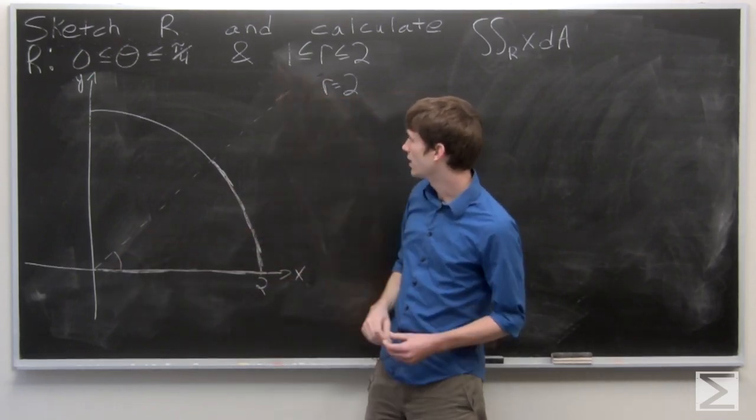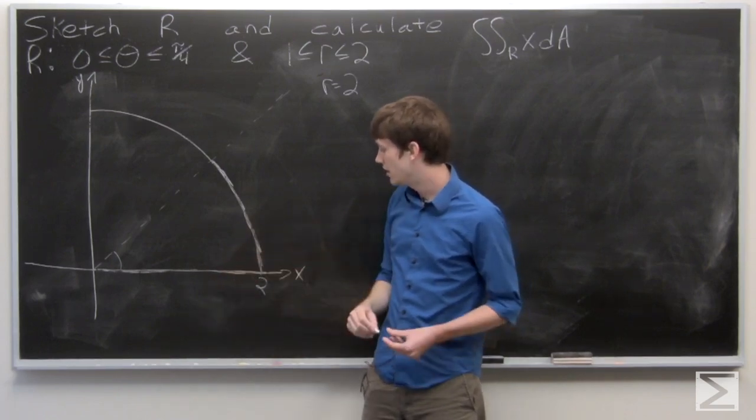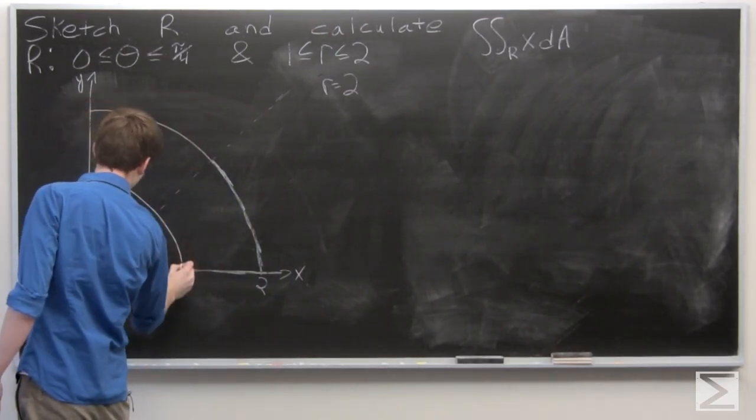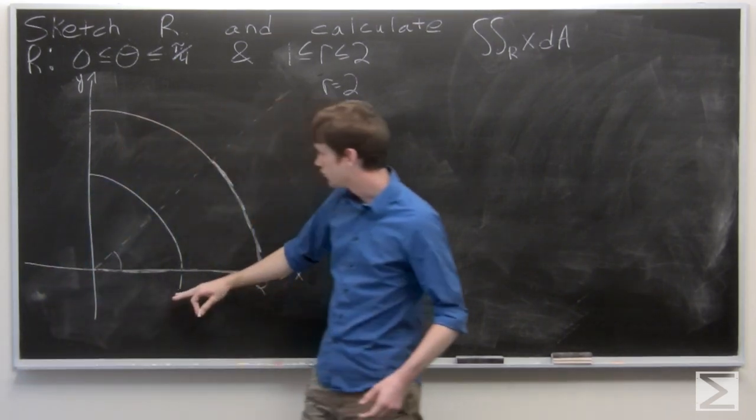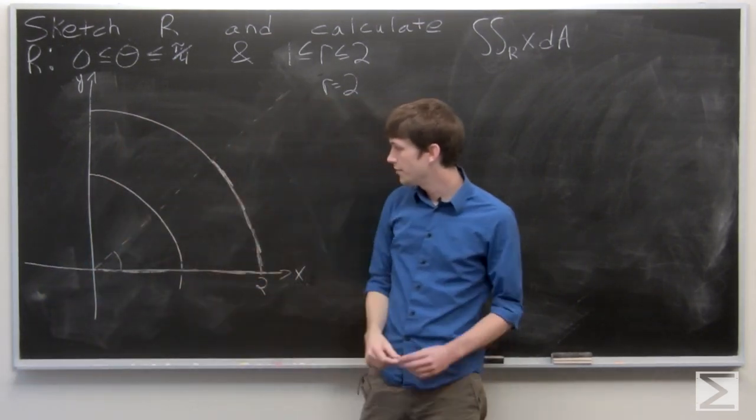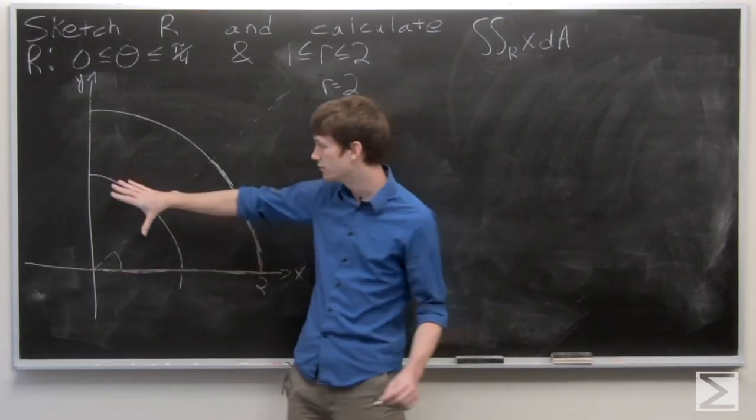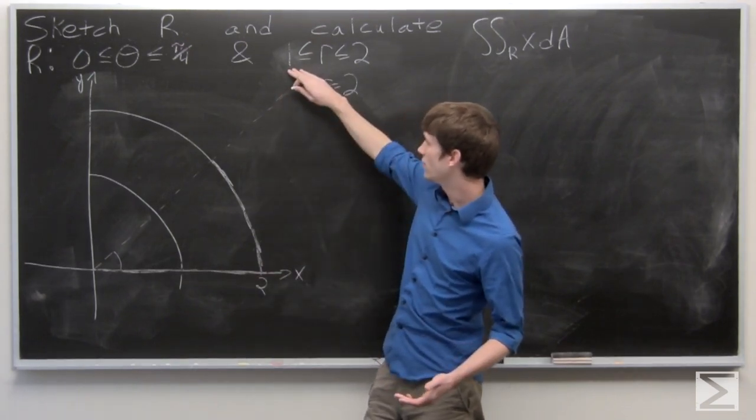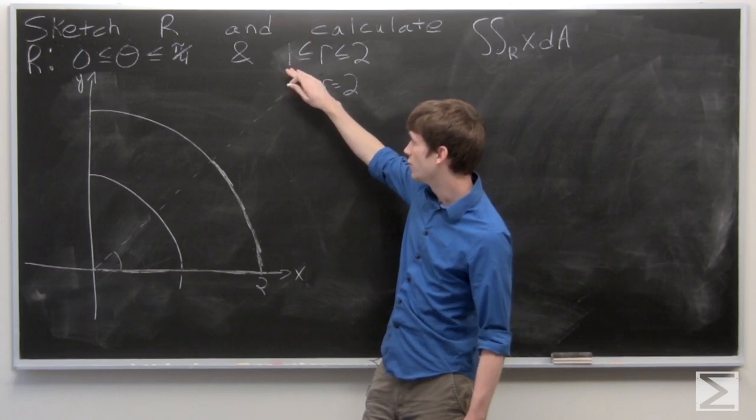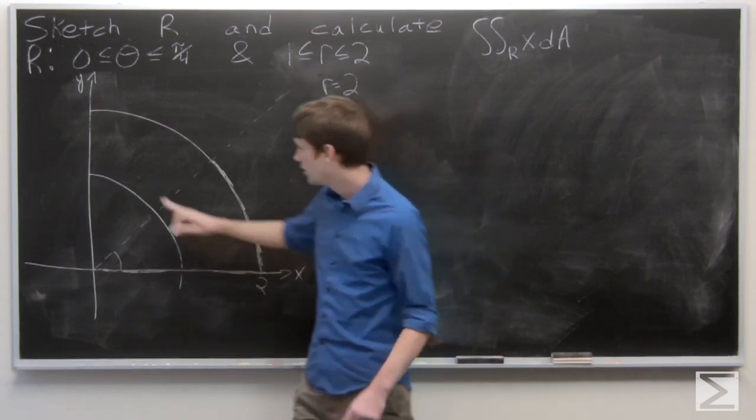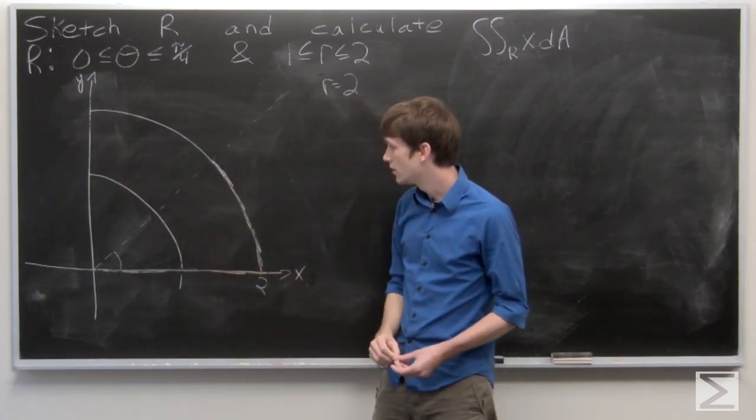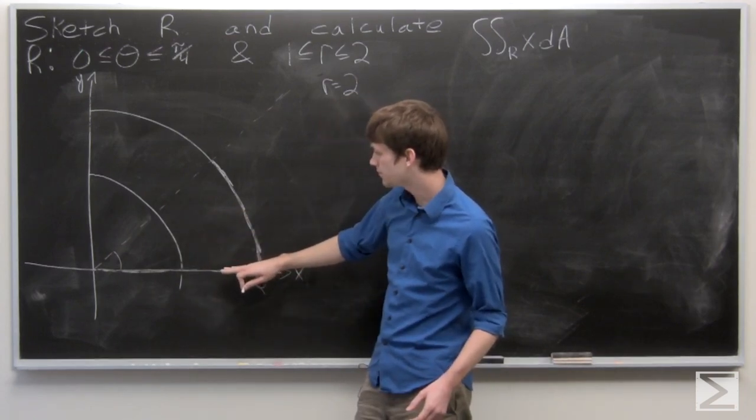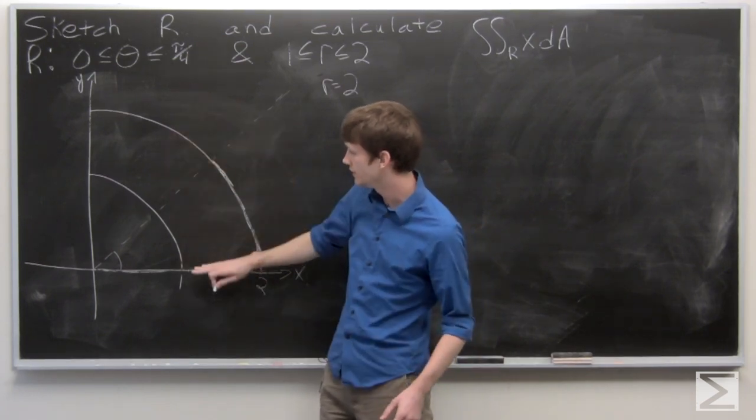And now we're looking at when R is equal to 1 is the other boundary. So we can draw a quarter of a circle of radius 1 again. You could draw the whole circle, but I'm just looking at the first quadrant. We're looking at radius values where we're between 1 and 2, so only values in between these two circles. It's kind of like part of a donut.